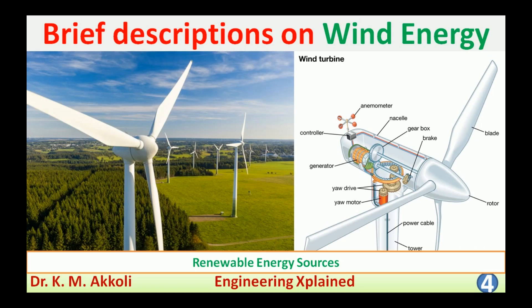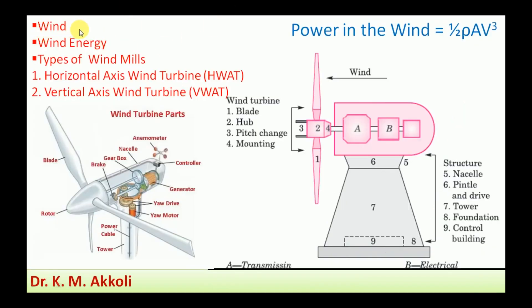First we should know that wind means a flow of air. Wind flow occurs due to the cooling and heating of the earth and water surfaces. The moving air is called wind, and since air is moving it has kinetic energy. Whatever energy is present in the flow of air by virtue of its movement and velocity is called wind energy.